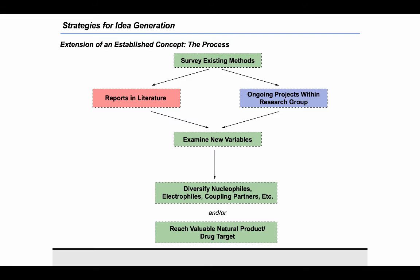The researcher then studies new variables that haven't been looked at yet, allowing access to more diverse products — often by changing the nucleophile, electrophile, or coupling partners involved in the transformation. Or the researcher may discover that changing a substrate variable makes it possible to reach new valuable natural product or drug targets. To show what this looks like in practice, I'll go through an example from my own career of how this idea generation strategy played out.